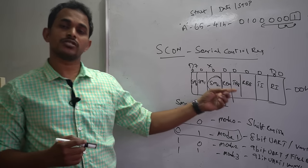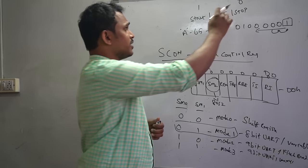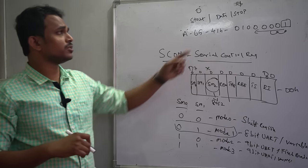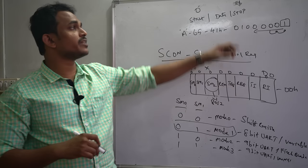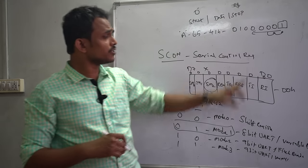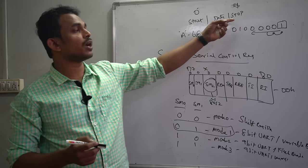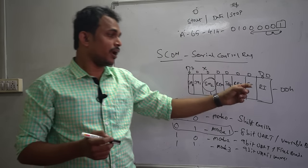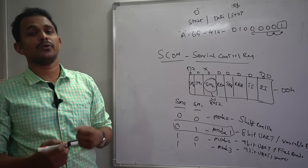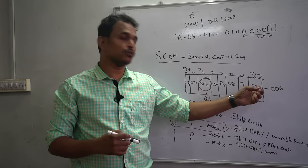TB8 and RB8 are stop bit monitor status bits. The start bit is always logic 0 and the stop bit is always logic 1. TB8 (Transmit Bit 8) monitors the 8th bit, which corresponds to the stop bit during transmission — if there is a stop bit error during transmission, TB8 is automatically set to 1. Similarly, RB8 is set to 1 if there is a stop bit error during reception. Otherwise, both remain at 0.